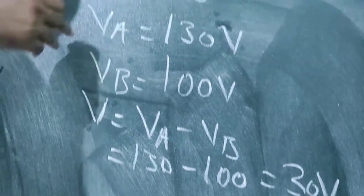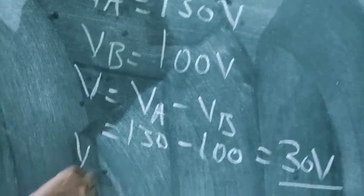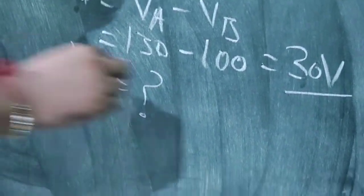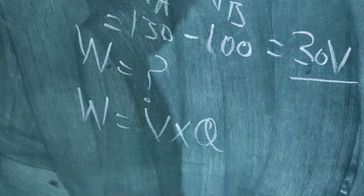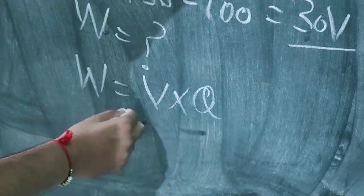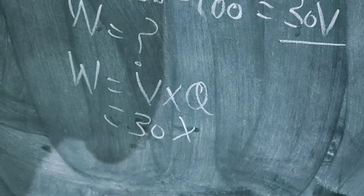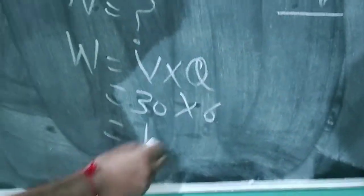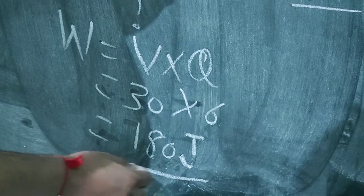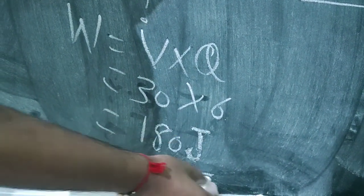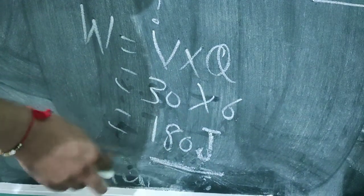Now, to find the amount of work, we use the formula W = V × Q, where V = 30 and Q = 6 coulomb. So the answer is 30 × 6 = 180 Joule. In the final answer, you should also write the unit — otherwise your marks may be deducted by the examiner.